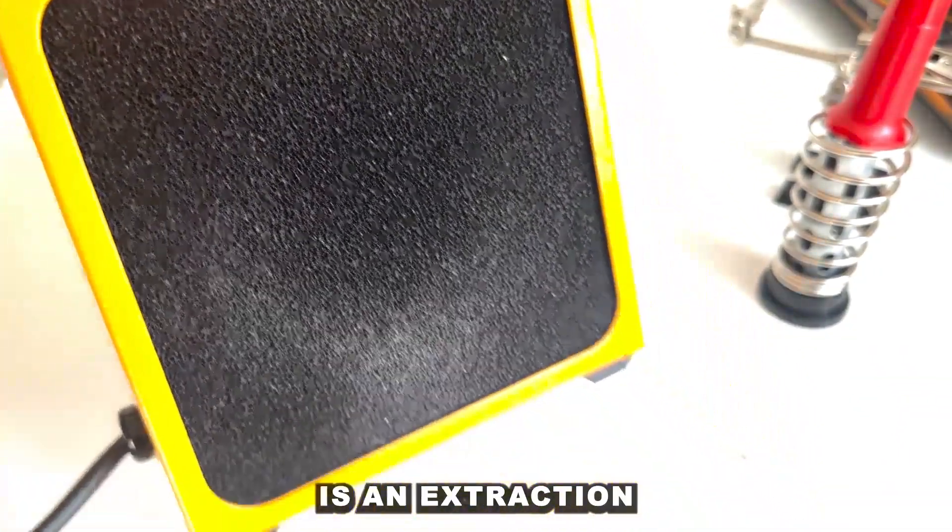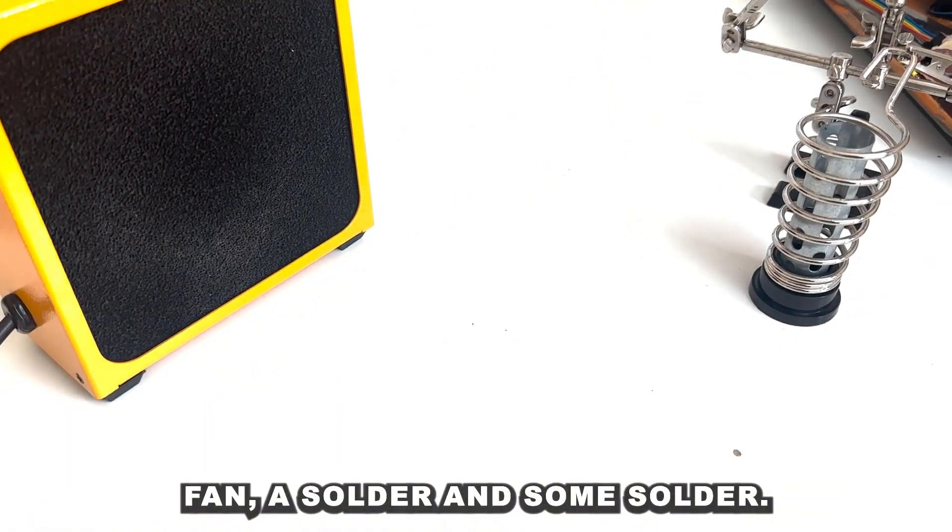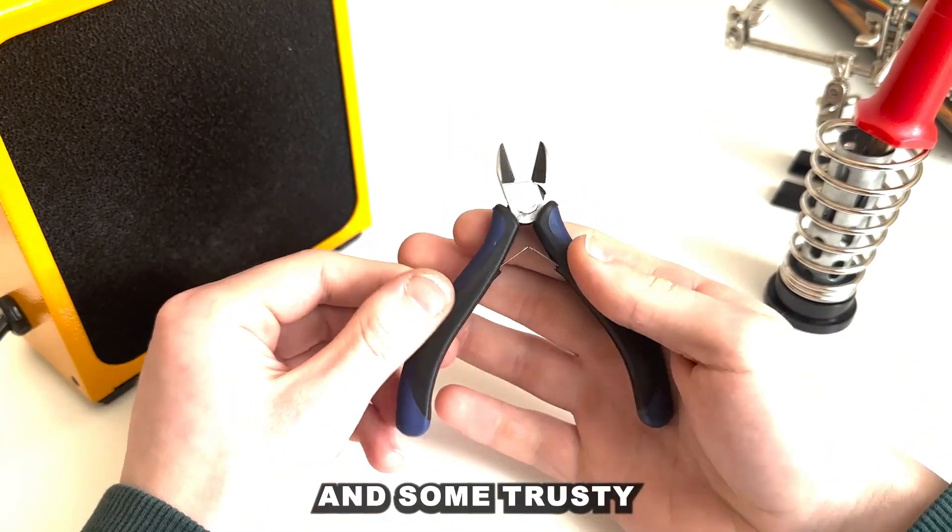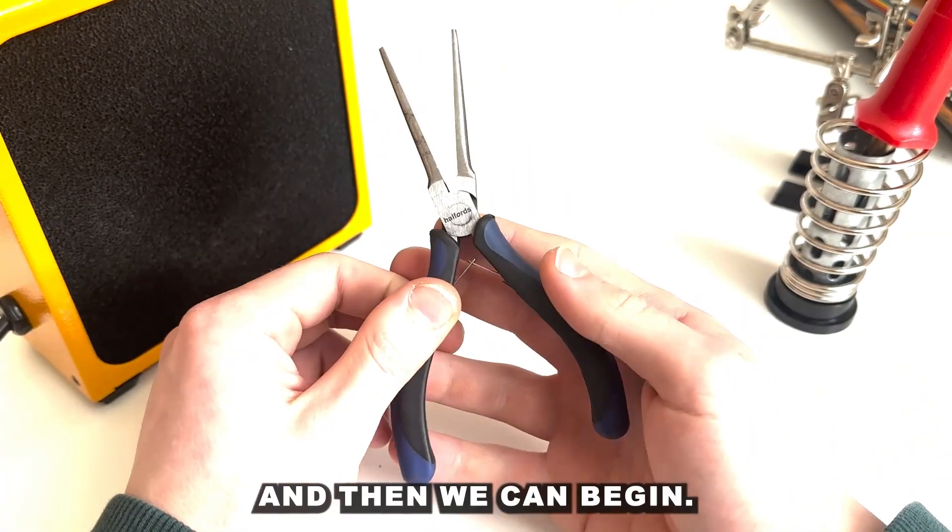What you'll need is an extraction fan, a soldering iron, some solder—I've got some leaded solder here—some trusty snips and some trusty long-nosed pliers, and then we can begin.